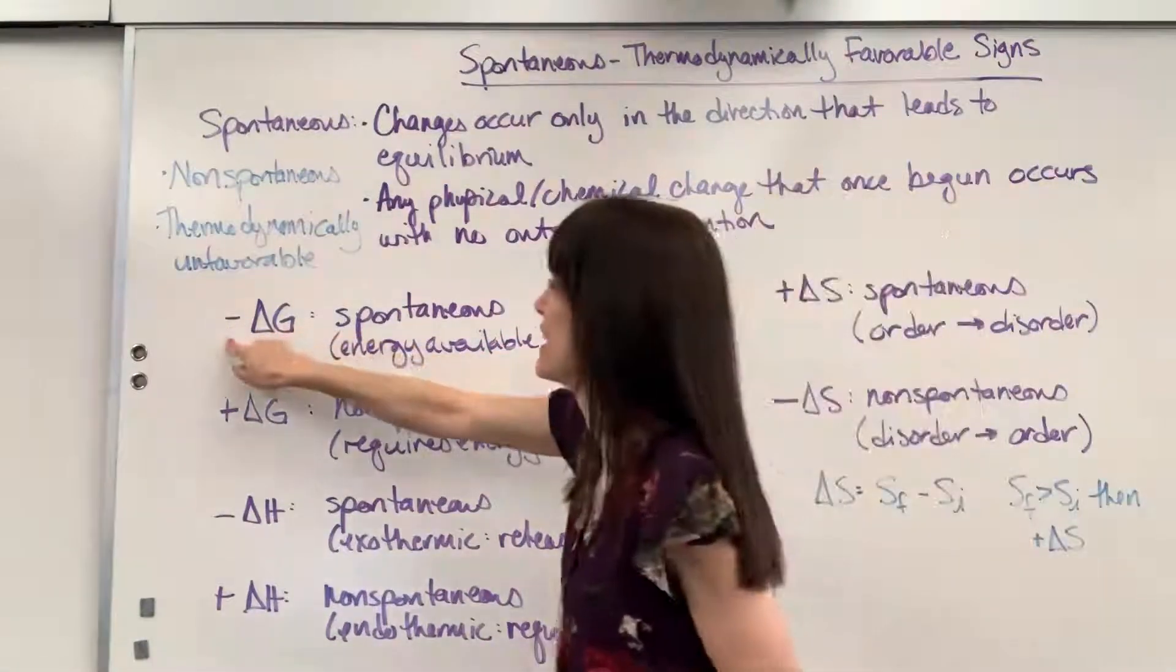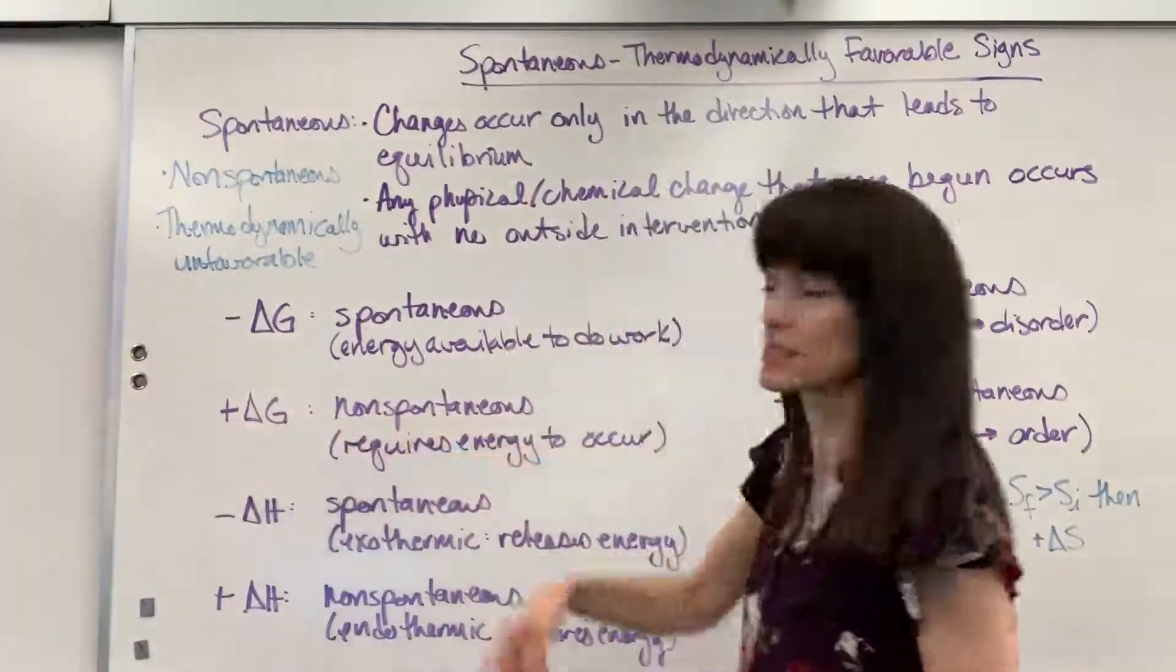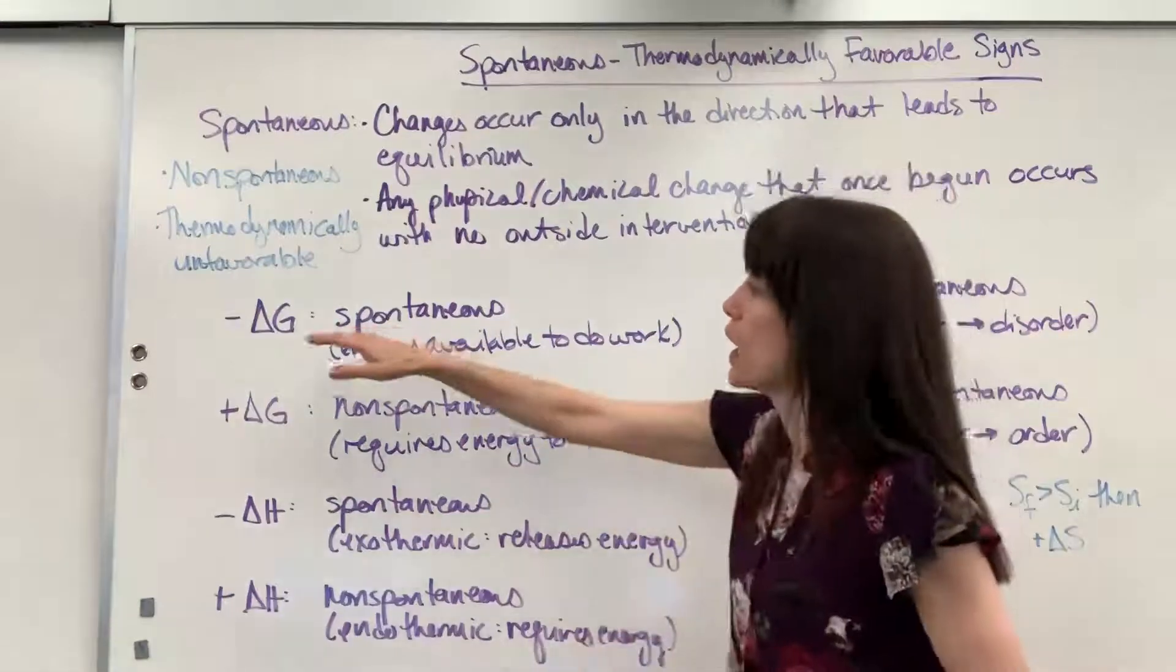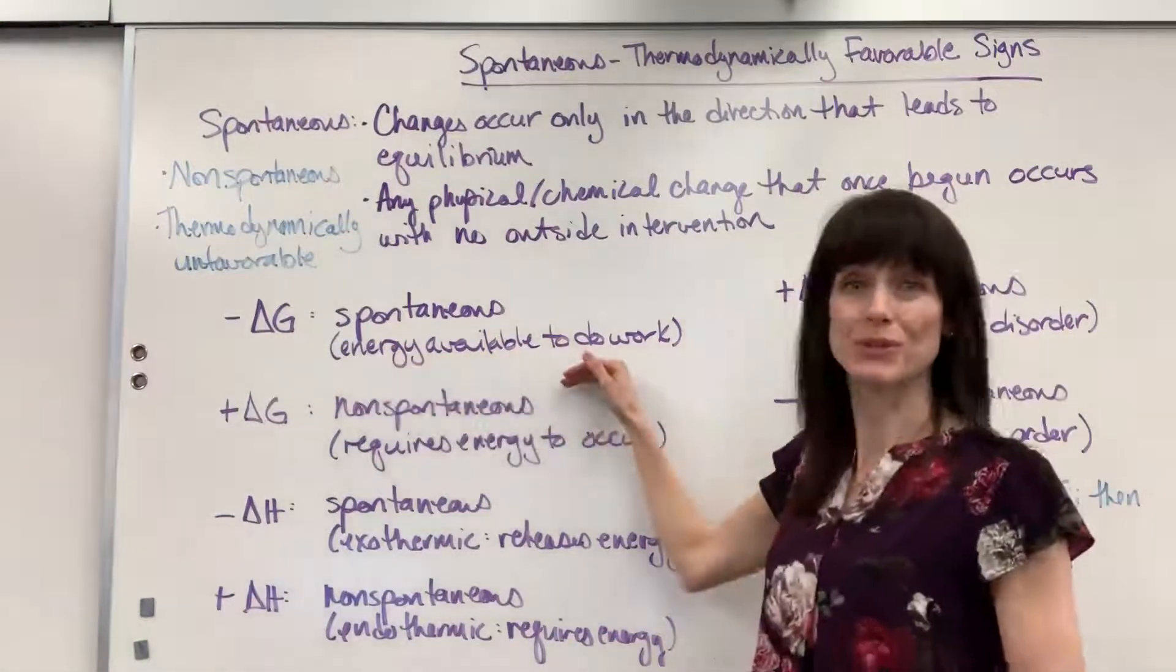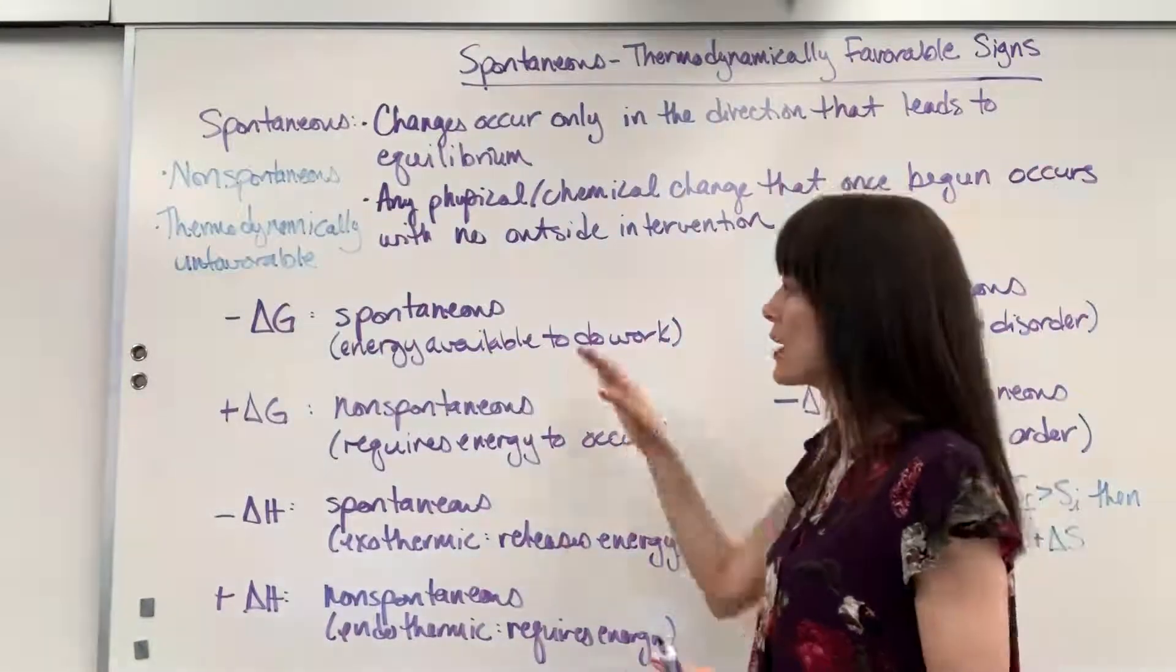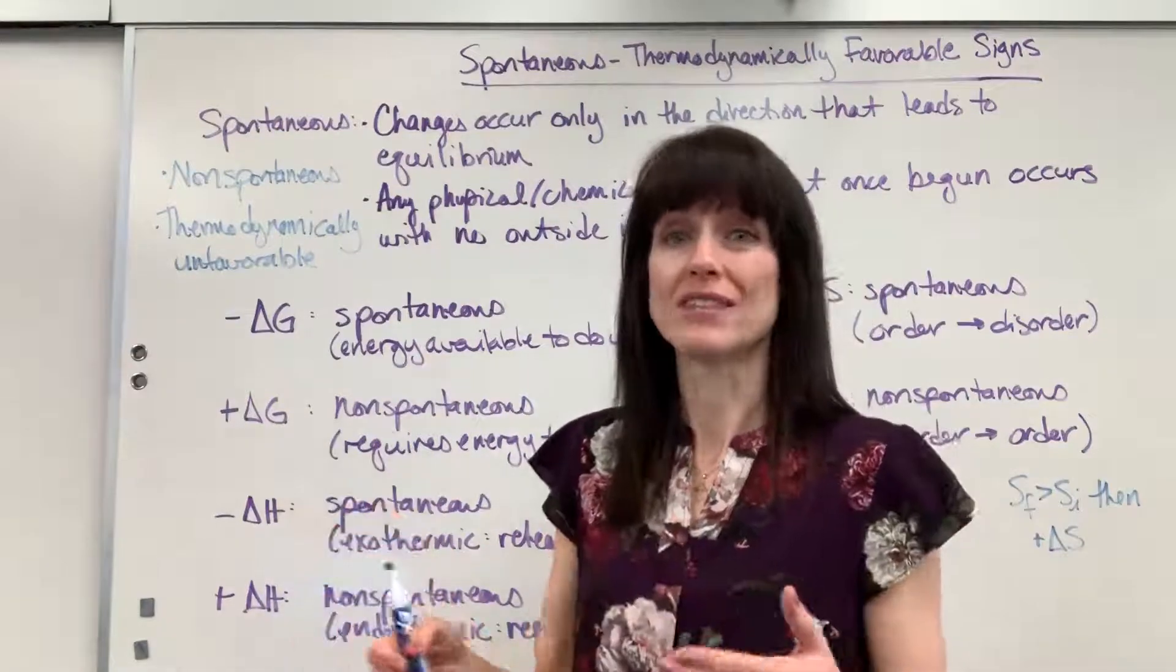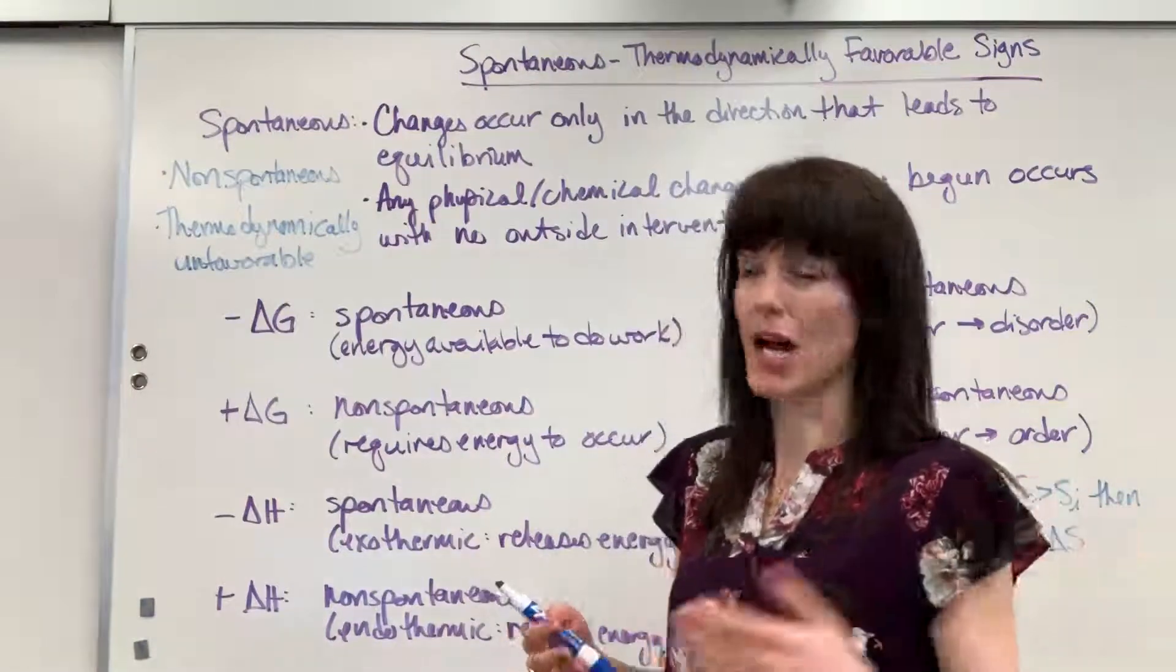Here we have it, delta G. Negative delta G means it's spontaneous. To give free energy, a negative delta G means that energy is available to do work. Woohoo! We like that, especially as engineers. We love systems that have energy available to do work because we'll jump in, harvest that energy, and transfer it somewhere else to usually make money or benefit mankind.